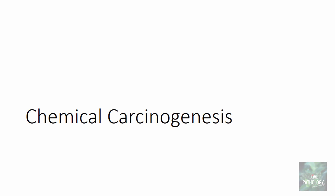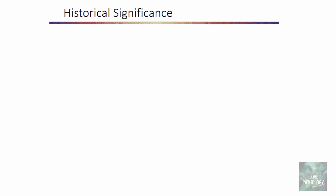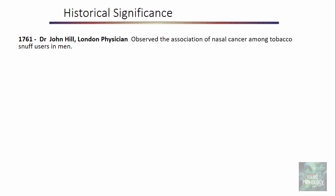Today's topic is all about chemical carcinogenesis. It is appropriate to give credit to those discoveries which have led to advancements in understanding carcinogenesis. The first, way back in 1761, Dr. John Hill, a London physician, was the one who observed the association of nasal cancer among tobacco snuff users in men.